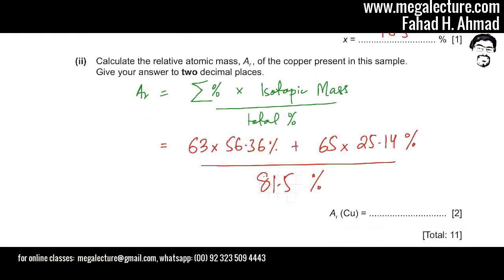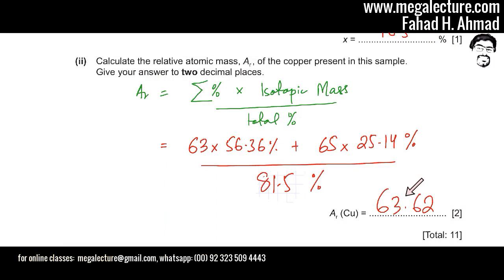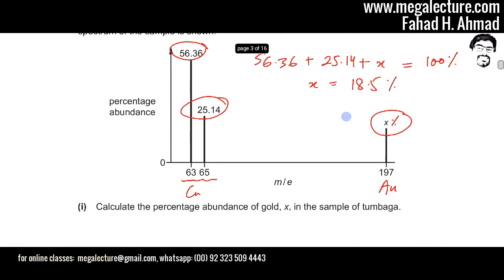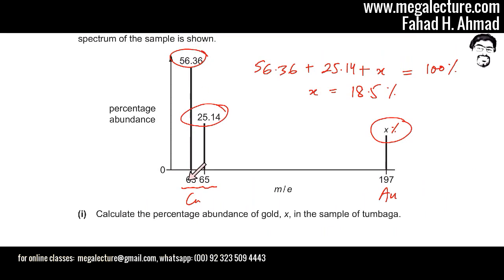The calculation is: (63 × 56.36) + (65 × 25.14), divided by 81.5%. Gold is excluded from the formula entirely — we are only finding the AR of copper. The result comes out to 63.62. So the average relative atomic mass of copper, based on the given mass spectrum, is 63.62.